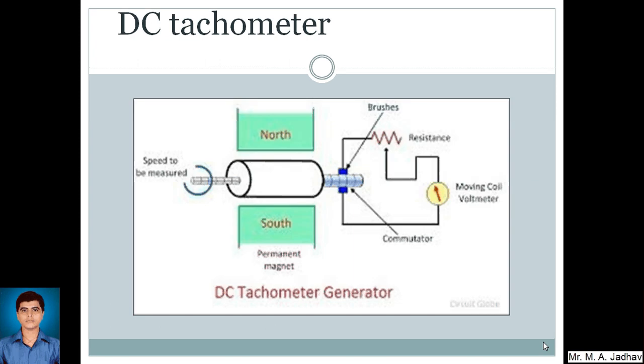So now this is the figure of DC tachometer generator. We can see different components of the DC tachometer generator here. Here it is the shaft whose speed is to be measured, and it is connected to the commutator here. The two brushes are connected to the commutator, and the circuit is completed with a voltmeter and a resistance. So with the help of this DC tachometer, we can find out the rotational speed of the shaft.